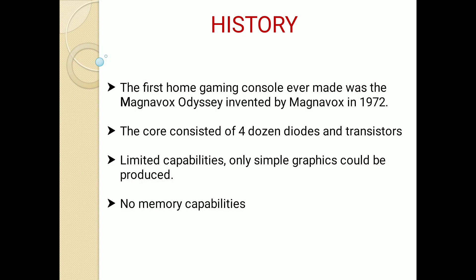History of the gaming console: The first home gaming console ever made was the Magnavox Odyssey, invented by Magnavox in 1972. The core consisted of four dozen diodes and transistors, had limited capabilities, and only simple graphics could be produced with no memory capabilities.